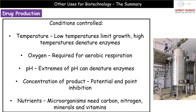The next factor is oxygen — we need to provide oxygen to ensure our microorganisms are undergoing aerobic respiration. We also need to consider the pH; extremes of pH, either too acidic or too alkaline, will lead to denaturing of those enzymes and bring our process to a rapid halt. We also need to think about the concentration of the product we're producing, because there is the potential for end product inhibition, where a product can inhibit an earlier stage and halt the process.